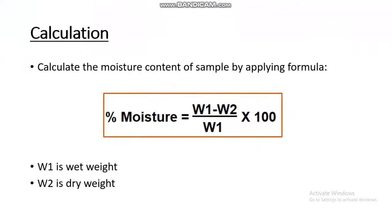For calculation, we use a formula in which W1 is the wet weight and W2 is the dry weight. In this way, we can measure the percentage moisture of the sample.